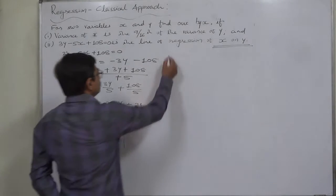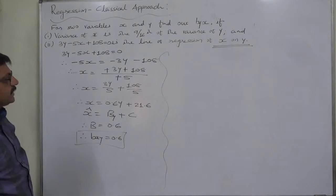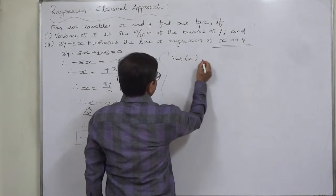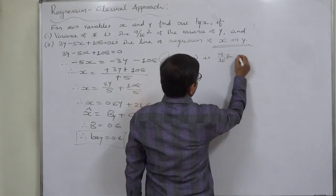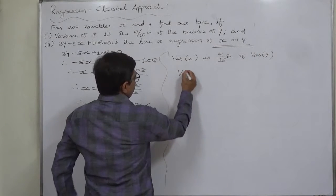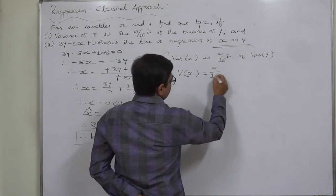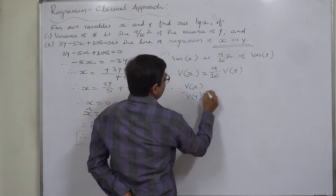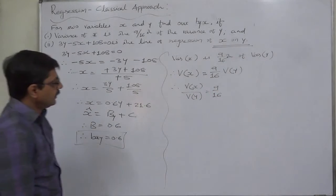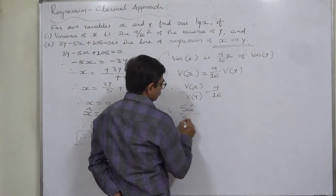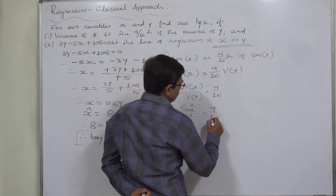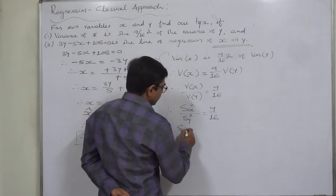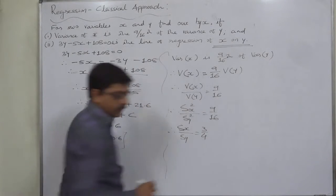Now let's use the other information. It is very clear: variance of x is 9/16th of the variance of y. That means the ratio of variance of x to variance of y is 9/16th, or 9 is to 16. We can easily take the square root on both sides. That means σx upon σy equals 3 by 4.